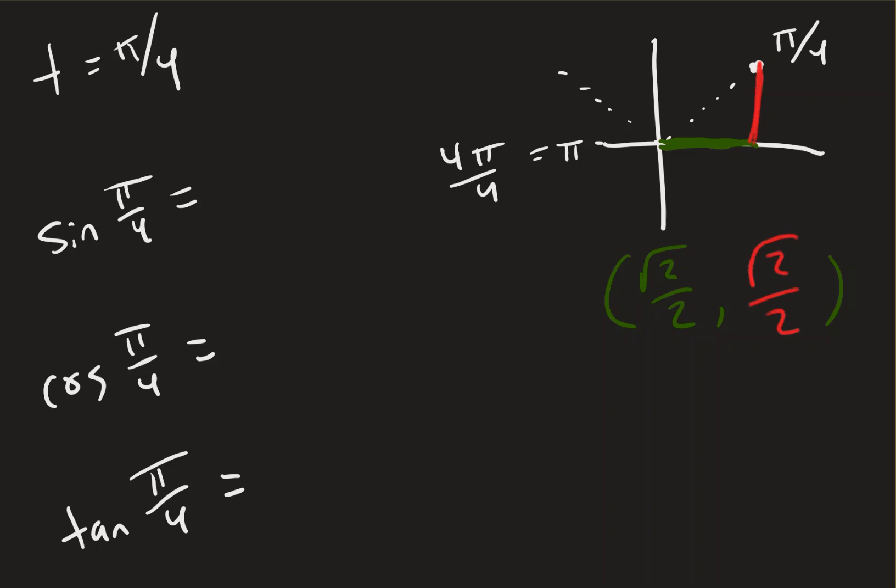Since it's in quadrant 1, we're going right and up. So x should be positive, y should be positive. Quadrant 1, you're going right and up, we're going positive, and up, we're going positive.